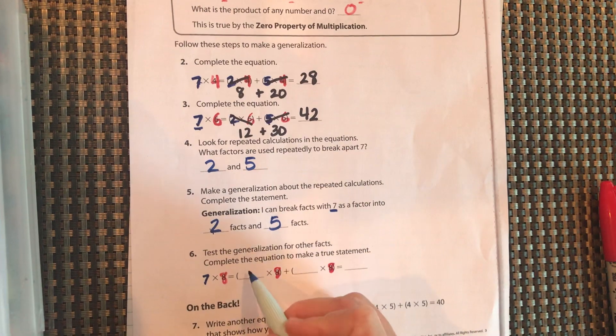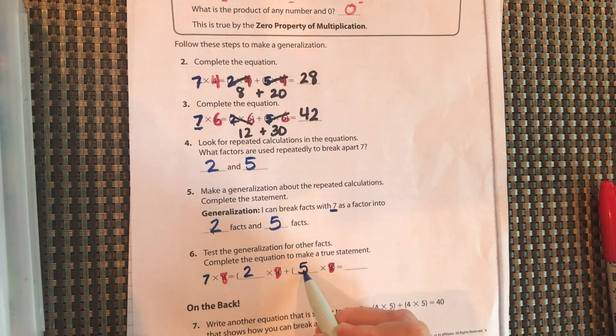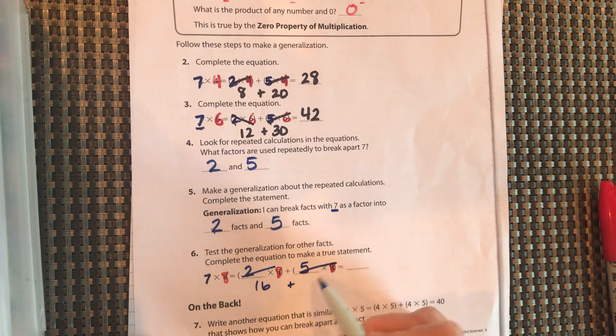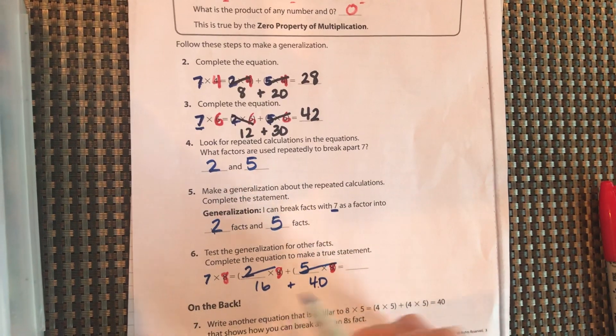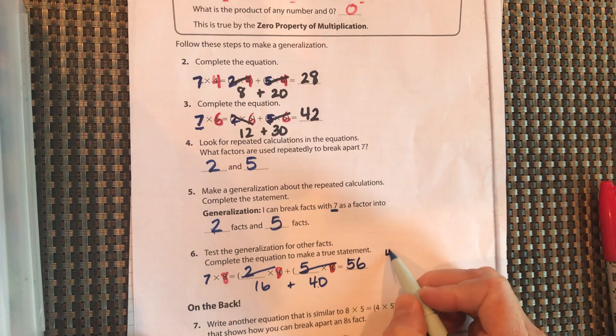Okay, hopefully you're back. 7, you either broke it up into 2 and 5, or it could be 5 and 2. Either way is perfectly fine. 2 times 8 is 16. 5 times 8 is 40. 40 plus 16 is 56. And you could have worked that off to the side.